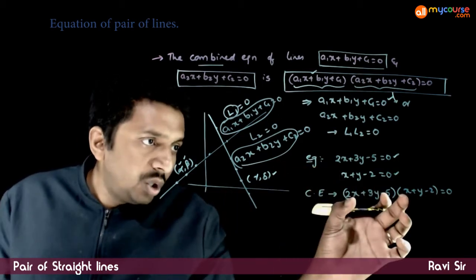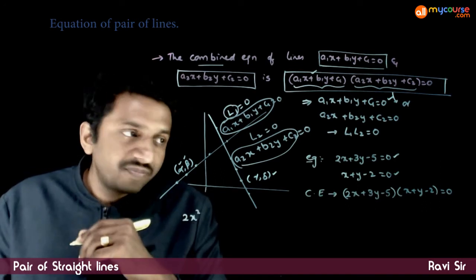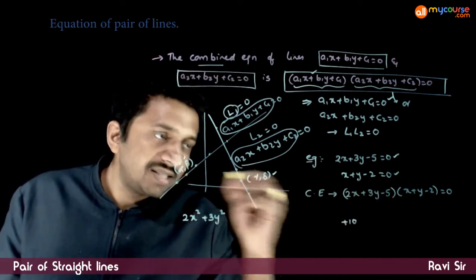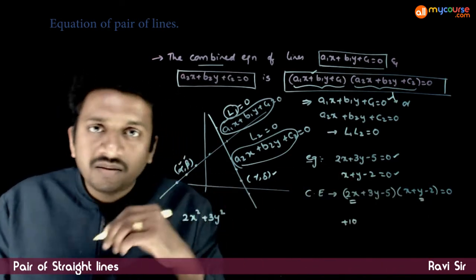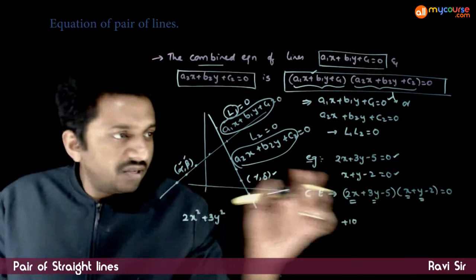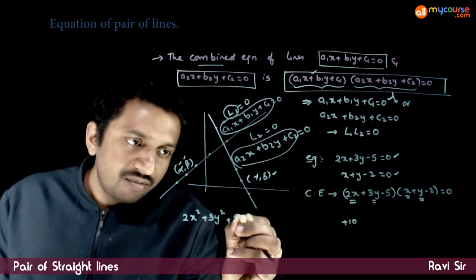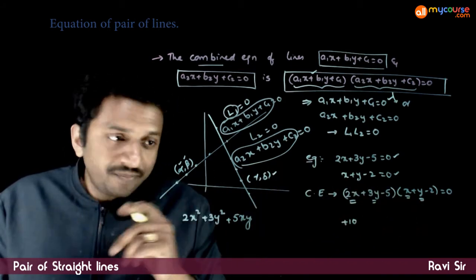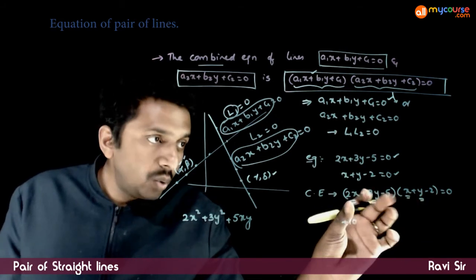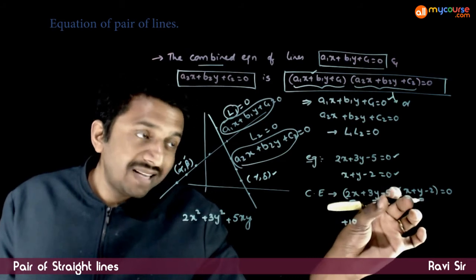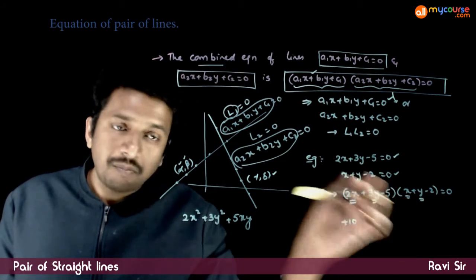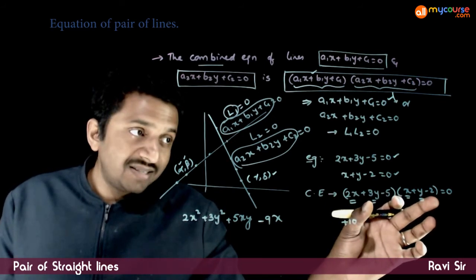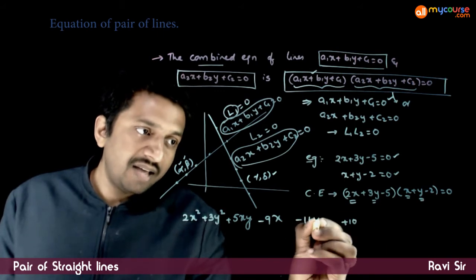You get 2x·x = 2x². Then 3y·y = +3y². The constant term gives 10. Multiplying 2x by y gives 2xy, and 3y by x gives 3xy, so 2xy + 3xy = 5xy. Then 2x·(−2) = −4x and (−5)·x = −5x, so −4x − 5x = −9x. Next, 3y·(−2) = −6y and (−5)·y = −5y, giving −11y. So the expanded equation equals 0.